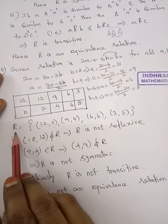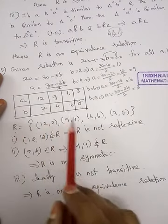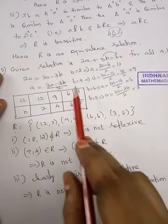The relation R defined is the set 12 comma 2, 9 comma 4, 6 comma 6, 3 comma 8.